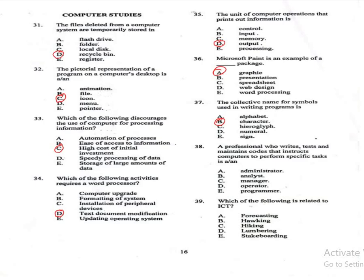Question 38: A professional who writes, tests, and maintains codes that instruct computers to perform specific tasks is — A: administrator, B: analyst, C: manager, D: operator, E: programmer. The correct answer is E, programmer. Programmers create software by writing code.